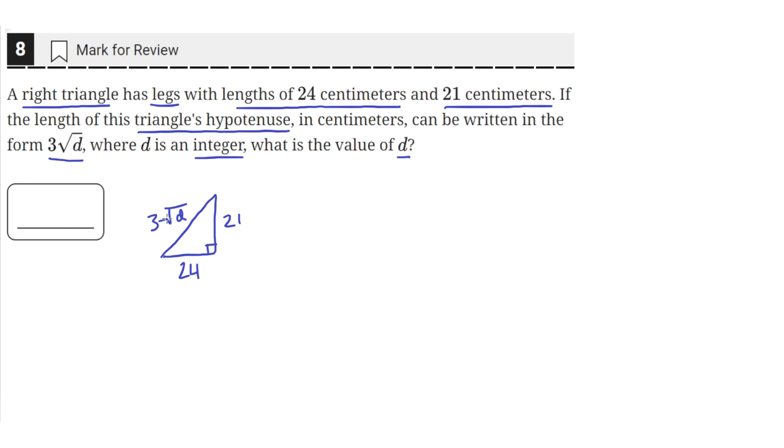So we can solve for the hypotenuse of this triangle by using Pythagorean's theorem, that a squared plus b squared equals c squared, where we can make 24a and 21b, the length of the two legs, and then c is the hypotenuse.